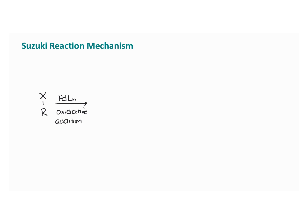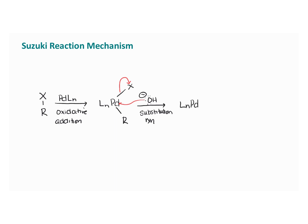When oxidative addition happens, the palladium with its LN ligands stays, with the halide attached to one side of the palladium and the R group attached to the other. This happens in a basic environment, so hydroxide comes in and attacks the palladium while the halide leaves — that is a substitution reaction. Then the boron comes through and we go through a transmetallation reaction.